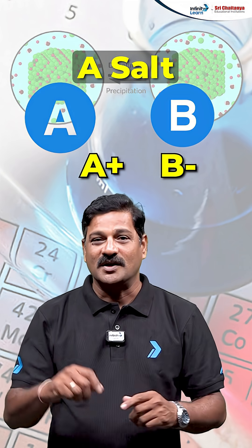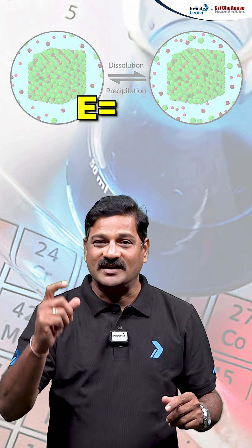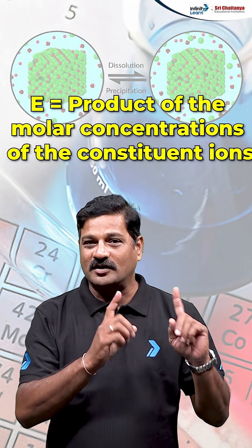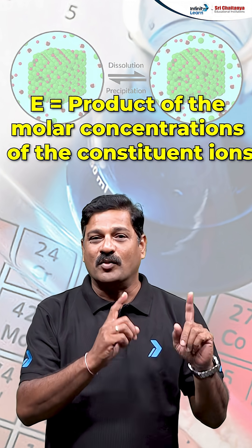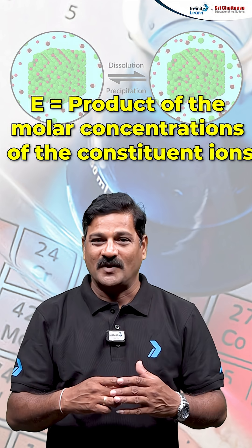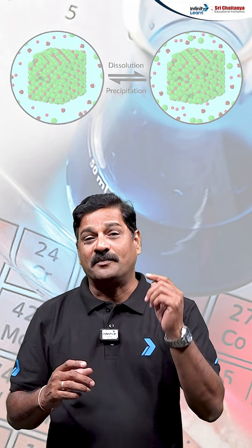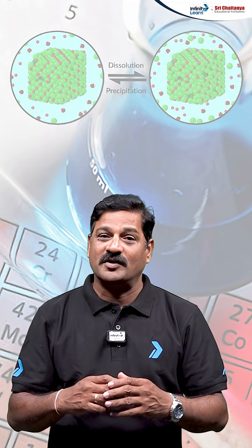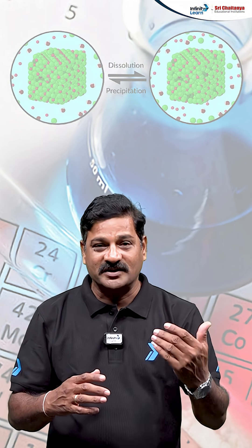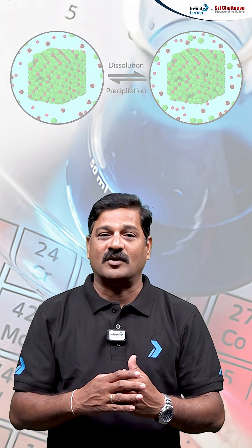In a saturated solution, the solubility product constant is equal to the product of the molar concentrations of the constituent ions. The applications of solubility product can have a lot of impact in predicting whether precipitation will happen or not.